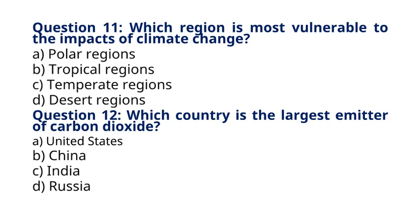Question 12: Which country is the largest emitter of carbon dioxide? A. United States. B. China. C. India. D. Russia. The correct answer to question 12 is option B: China. Explanation: China is the largest emitter of carbon dioxide, primarily due to its extensive use of coal for energy production and industrial activities.